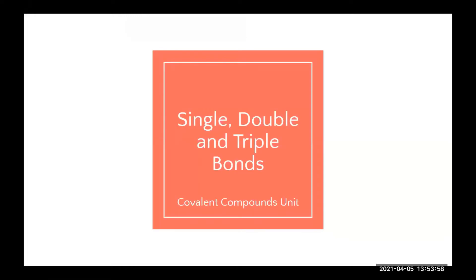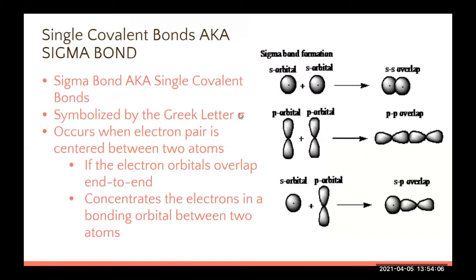Now we're going to talk about single, double, and triple bonds — these are your building blocks of covalent compounds. A single bond is also known as a sigma bond. Sigma bond, single covalent bond, and single bond are all the same thing. One word — sigma — goes with one line, one bond.